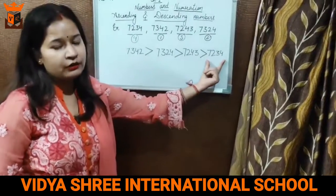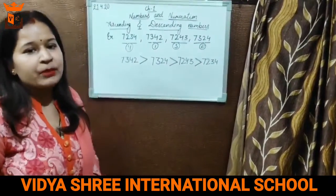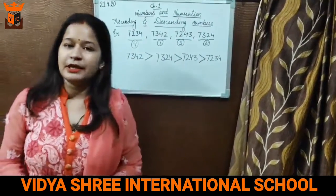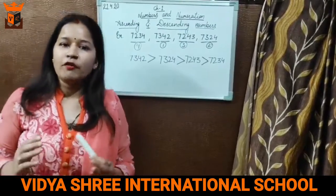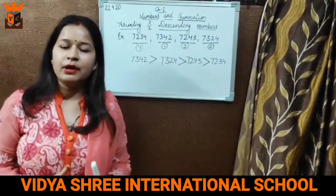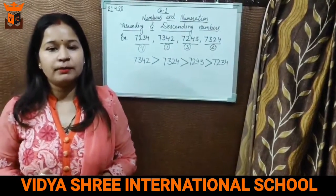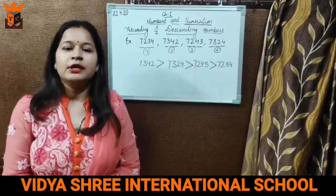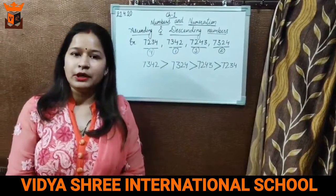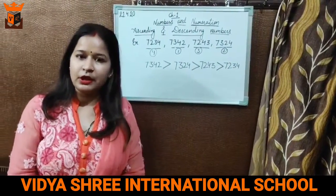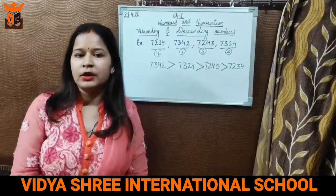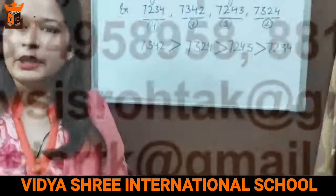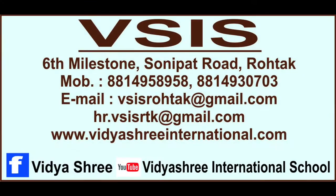7234 is the smallest number. So students, as you can see, the concept of ascending order and descending order of numbers is very easy to understand. Hopefully, you will do this in your notebooks as well as in your book. Thank you.